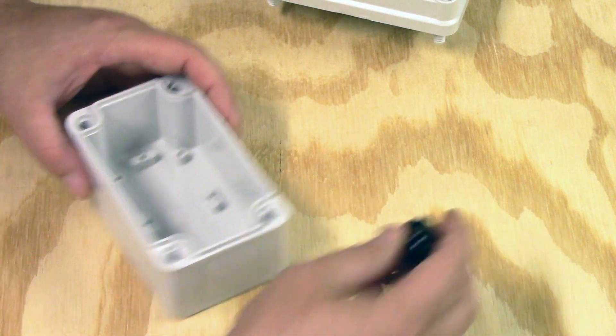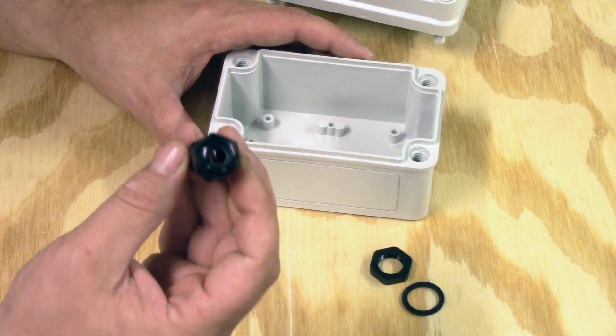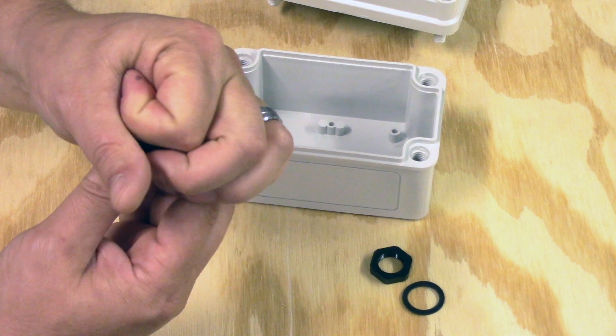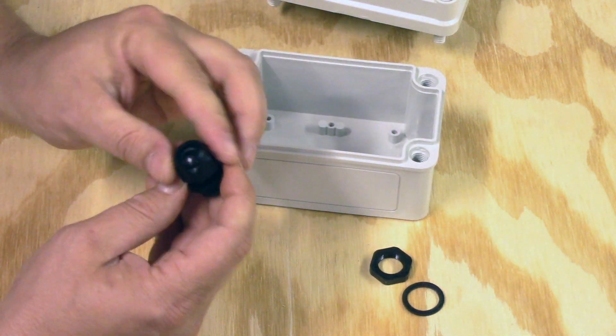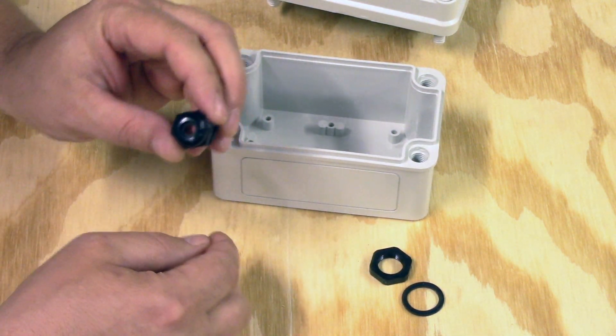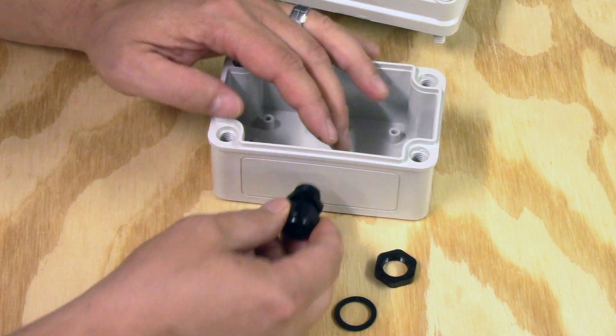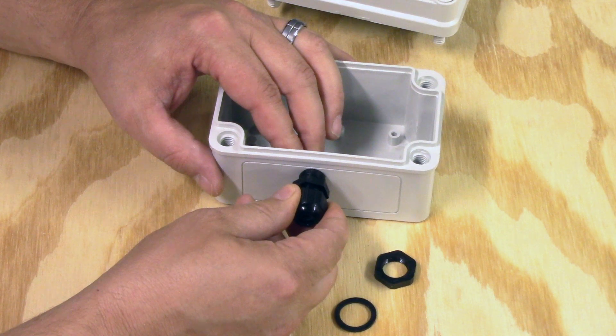We're going to be installing a PG-9 cable gland which as you tighten it a rubber seal tightens around the cable, therefore making a weatherproof seal there as well. A seal ring and a lock nut for where it goes through the box and that will make that weatherproof as well.